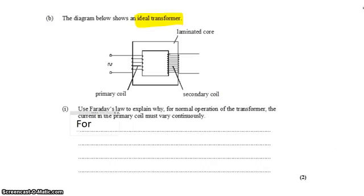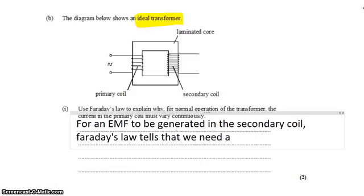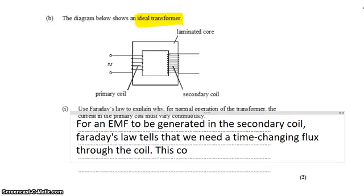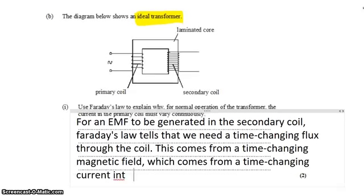The reason is that for an EMF to be generated in the secondary coil, Faraday's law tells us that we need a time-changing flux through the coil. This comes from a time-changing magnetic field, which in turn comes from a time-changing current in the primary coil.